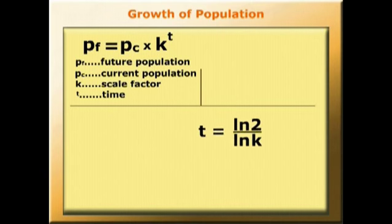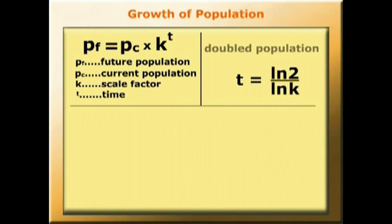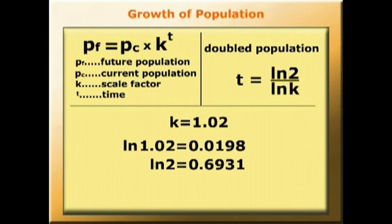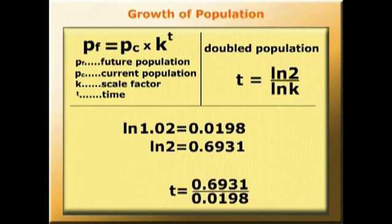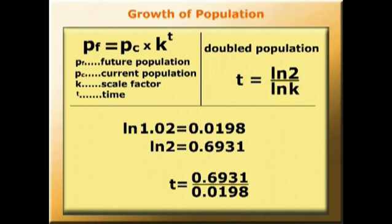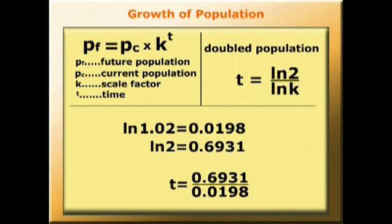Now we can find t, the amount of time it takes for the population to double. Here the growth rate is 2%, so the scale factor is 1.02. Log 1.02 equals 0.0198. Log 2 equals 0.6931. So substituting into the formula we have t equals 0.6931 over 0.0198. So solving for t, t equals 35.